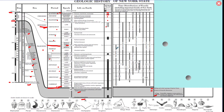The gray bars show when organisms existed. The trilobite bar started in the Cambrian and survived until the end of the Permian. Nautiloids started in the Cambrian and are still alive today. The shortest-lived organism shown is the placoderm fish — born in the Silurian and extinct by the end of the Devonian.